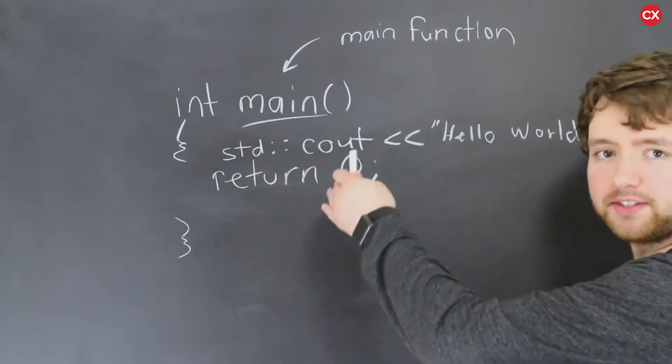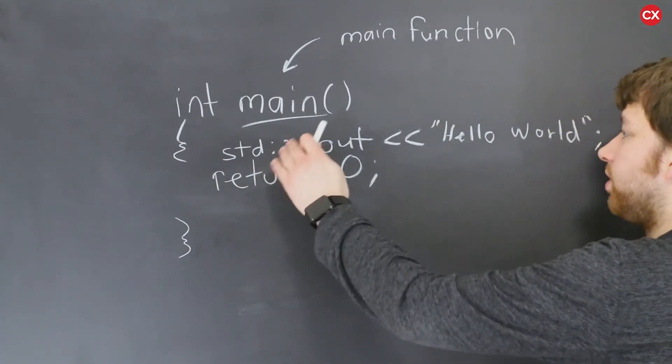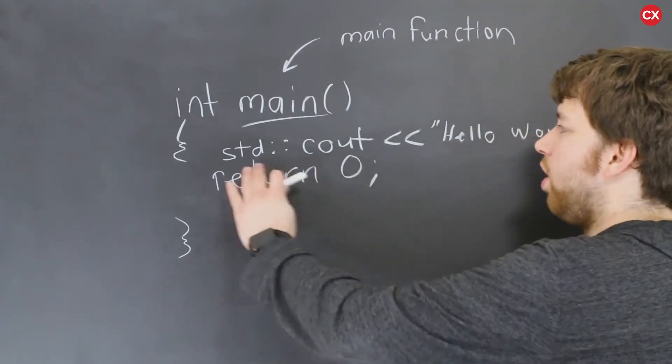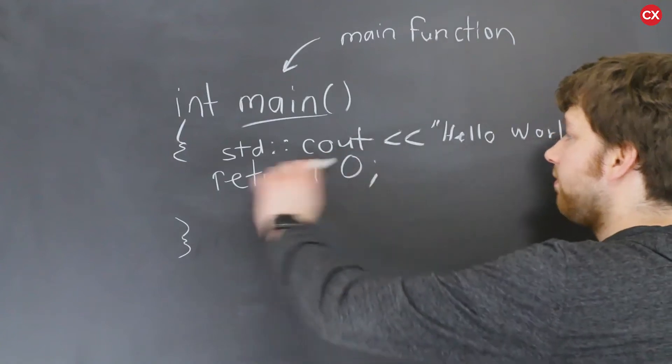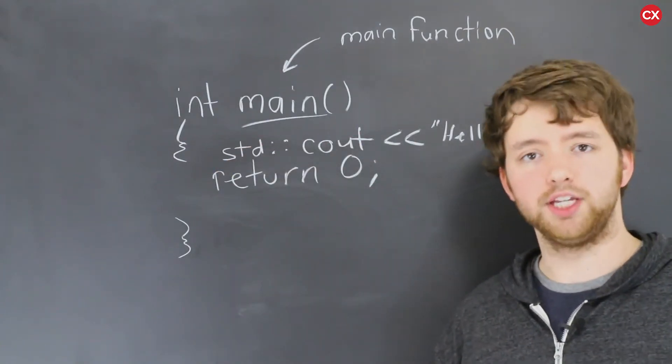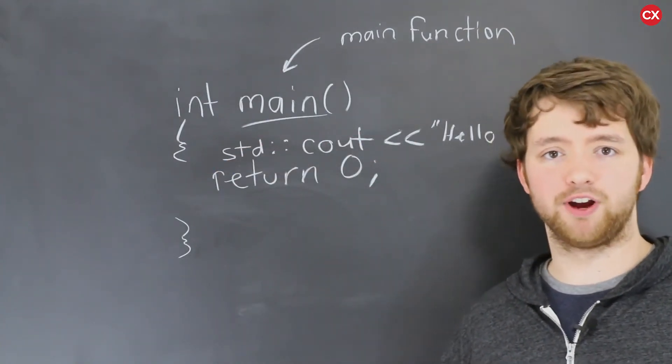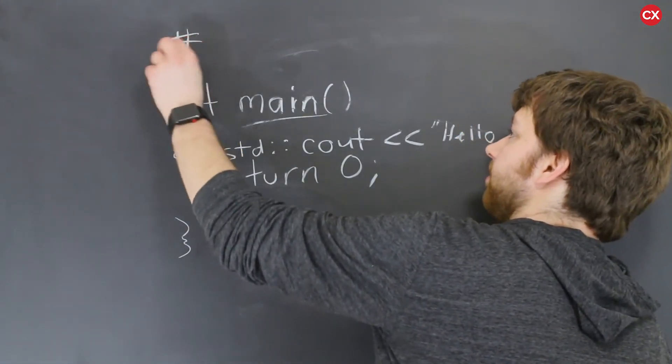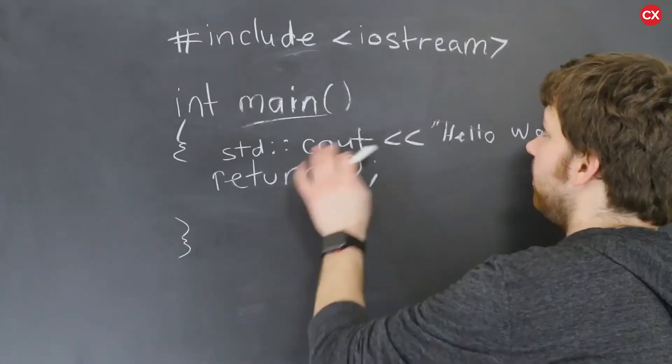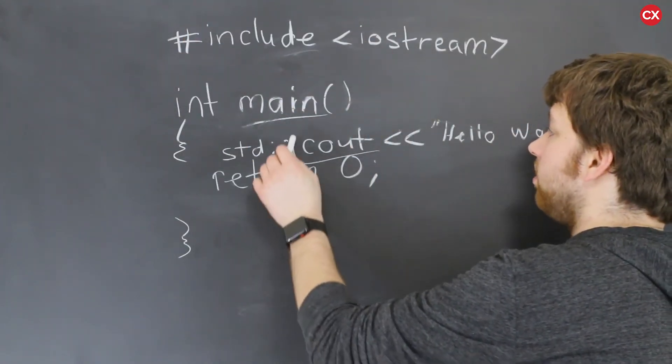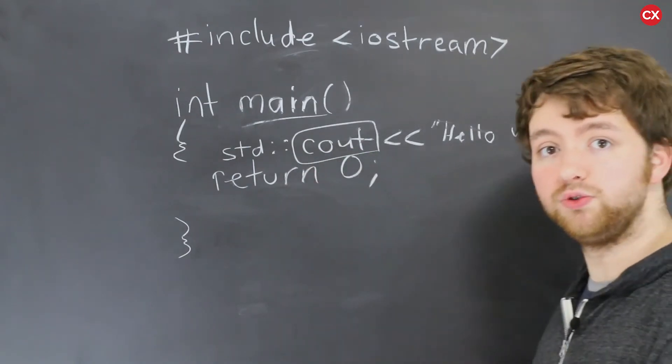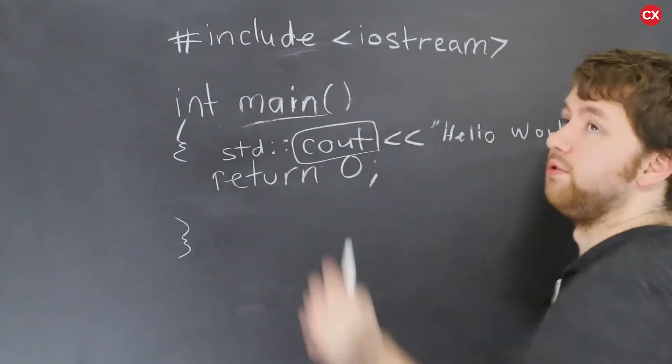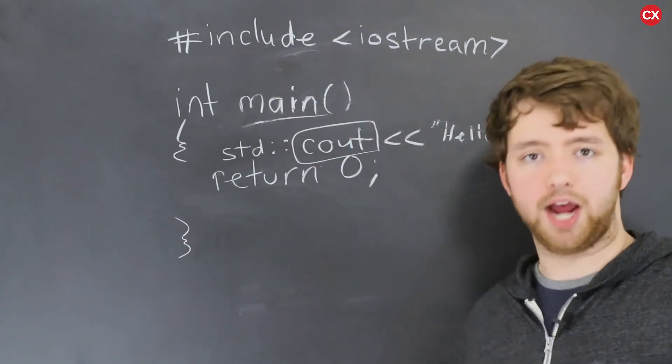So this STD, which by the way means standard, colon, colon, cout, this comes from somewhere, right? We don't just make it up. How did we know to put that there? Well, in order for this to become available to us, we include it in our C++ program. Because of that, inside of your C++ program at the top, you're going to have something that looks like this. So this iostream inside of that, this cout is defined, right? So we can use cout because we're taking advantage of this iostream, which stands for input output stream.